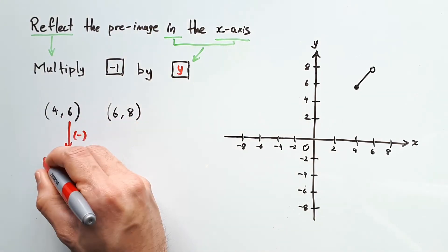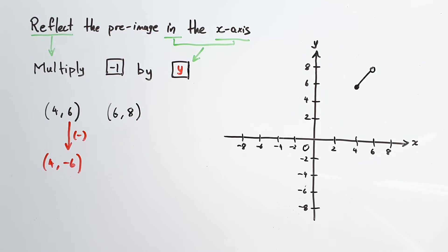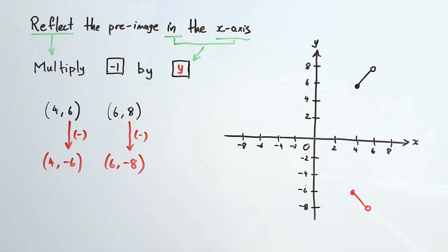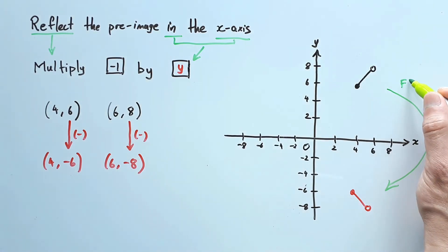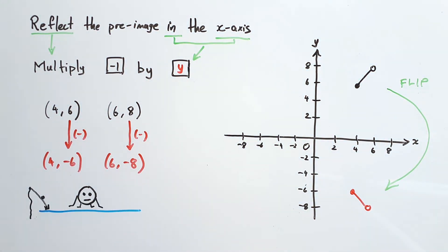Do this for each pre-image point, and we get 4, negative 6 and 6, negative 8. Plot them out, and we see our line has flipped downwards, or underneath. Just like looking at your reflection in the water.